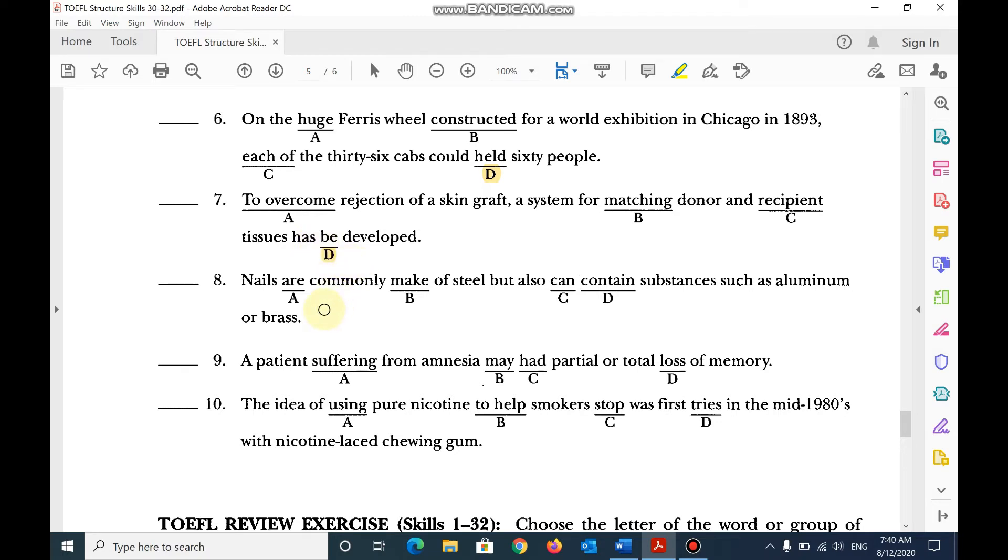Number 8, nails are commonly made passive. Number 9, a patient suffering from amnesia may, followed by verb 1, have.